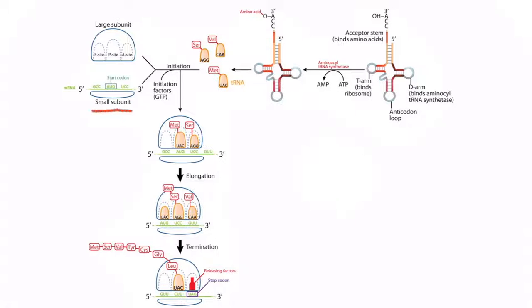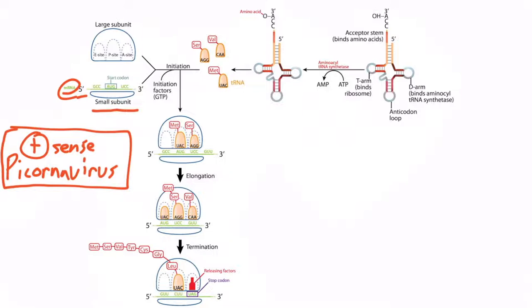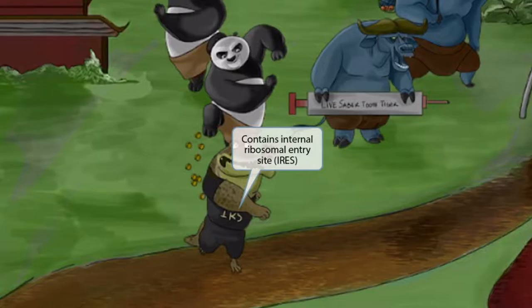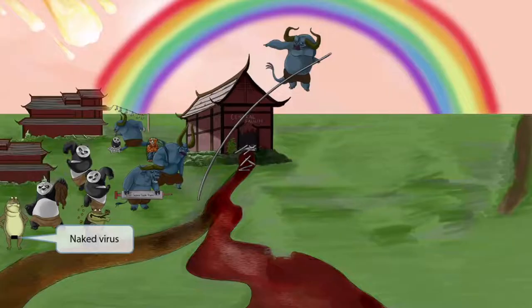Now the panda revolt continues as this villager rips off the clothes of his taxing oppressor. Look at that gator — out of uniform and naked. This naked henchman represents the fact that polio is a naked virus, meaning it lacks an envelope. So naked henchman for naked virus. This naked henchman got his clothes ripped off and then dove right into the river to escape the panda fury — it's almost like he's getting swallowed up by the river. This swallowing represents how naked viruses enter host cells through endocytosis.